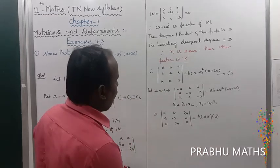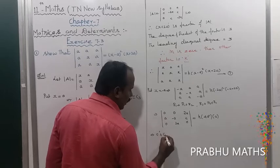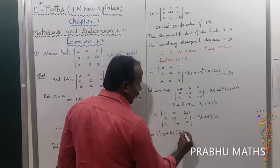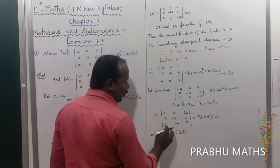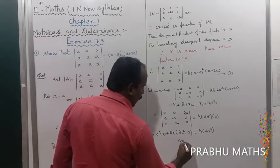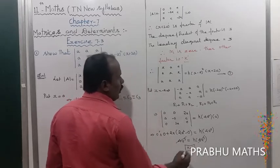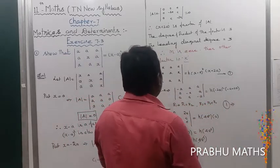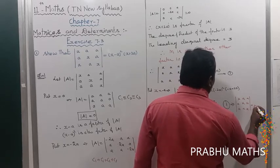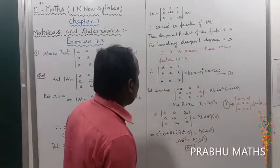So the determinant evaluates to 4a³, and the right-hand side gives k times 4a². Wait — k times 4a³. So 4a³ equals k times 4a³; cancelling 4a³ gives k equals 1. Therefore the final result is: determinant of x a a / a x a / a a x equals (x minus a) whole square times (x plus 2a).